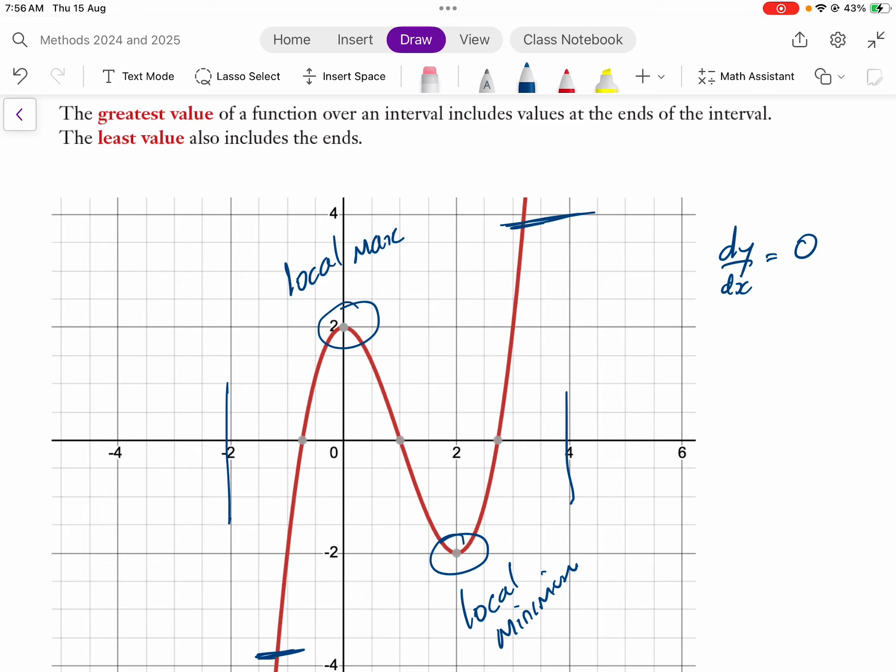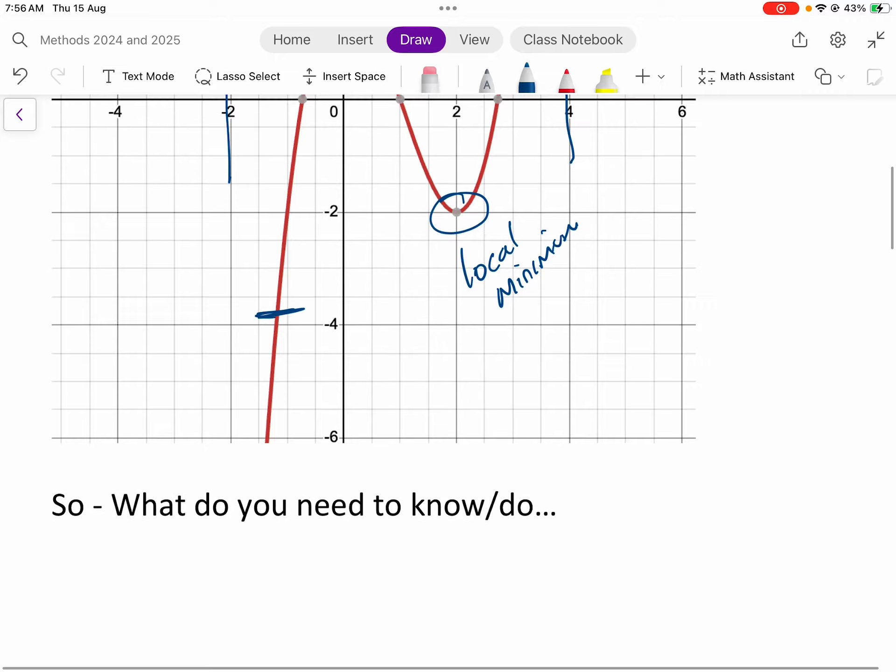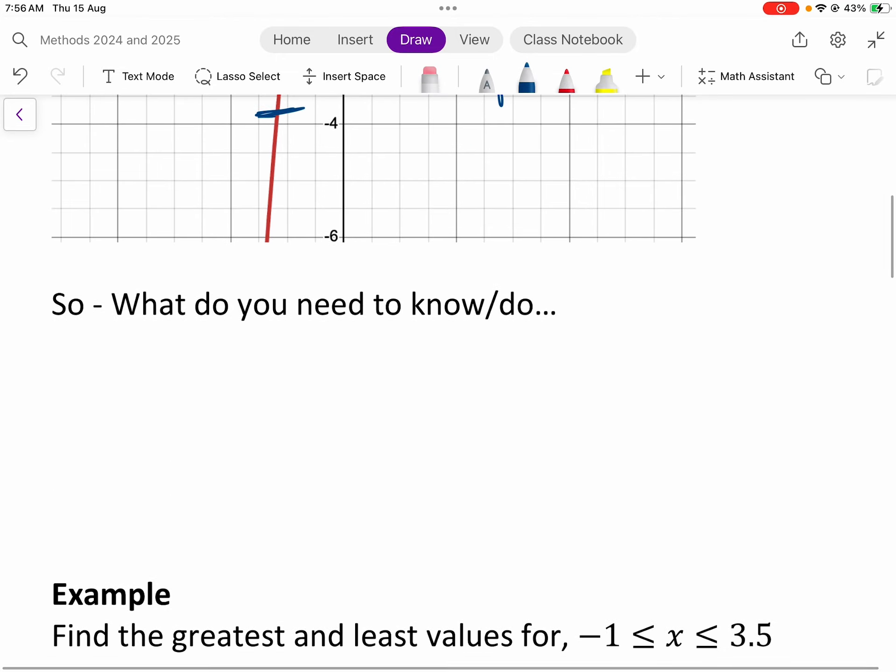than our max and minimum values. So what do you need to do? We need to find the endpoints. So if you're given a domain of negative three to three, you would want to find how high or low is that and how high or low is that.